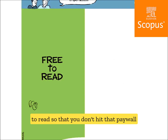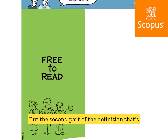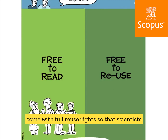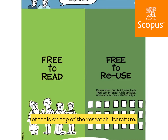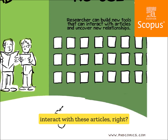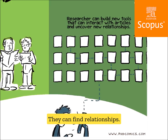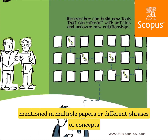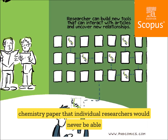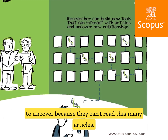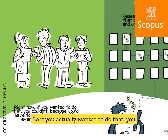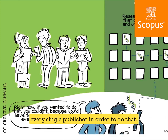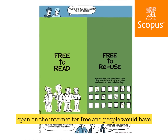There are two components of open access. The first is that articles are available for free to read, so you don't hit that paywall when you click to read the full text. The second part — every bit as important — is that articles come with full reuse rights, so scientists can build an entire new tier of tools on top of the research literature. Those tools can mine articles, find relationships, find snippets of genetic code mentioned in multiple papers, or concepts referenced across biology and chemistry papers that individual researchers would never uncover on their own.